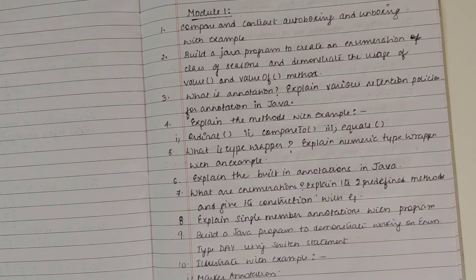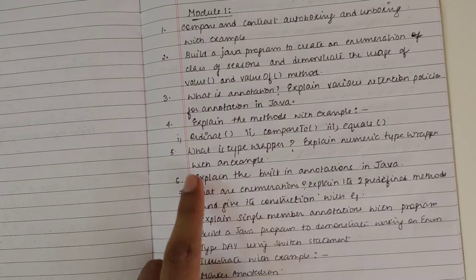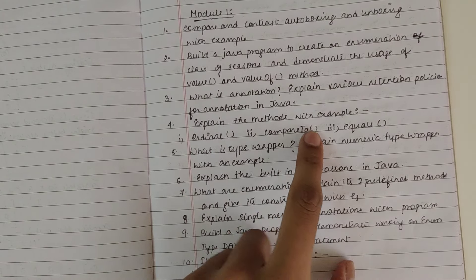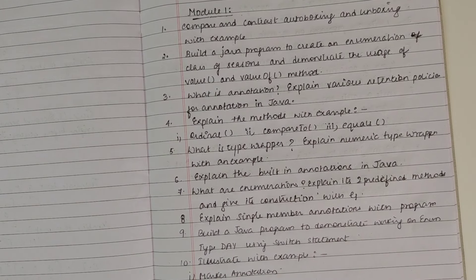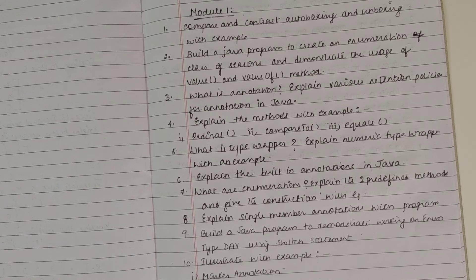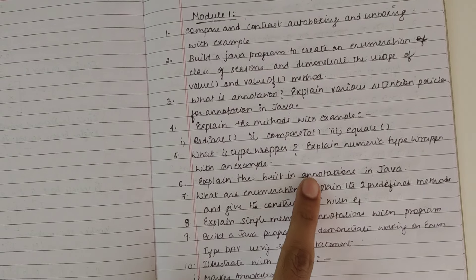What is annotations? Explain the various types retention policies of annotations. Then several methods like ordinal method, compareTo method, and equals method. What is type wrapper class? Explain with numerical type and type wrapper with example.